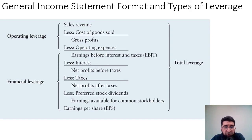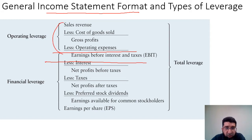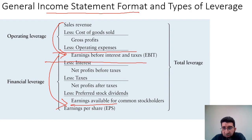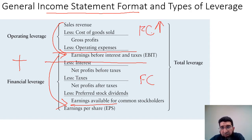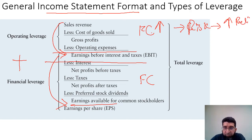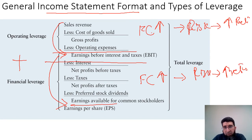Let's look at operating leverage, financial leverage, and total leverage in income statement format. The income statement is divided into two parts: before EBIT and after EBIT. Operating leverage is the connection between sales revenue and EBIT, while financial leverage is the connection between EBIT and earnings available for common stockholders. Total leverage is the sum of operating plus financial leverage. In each part, we look for fixed costs — higher fixed costs create risk compensated by higher returns; lower fixed costs mean lower returns.